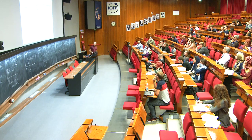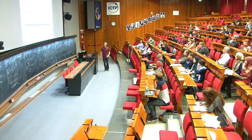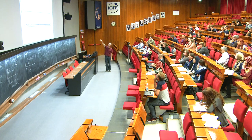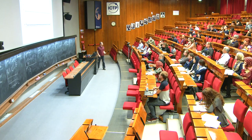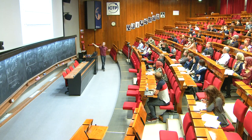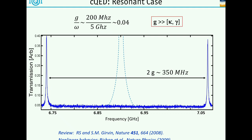If I bring my qubit on resonance with the cavity and measure transmission through my cavity, originally I would expect one Lorentzian line in the center. But now that my qubit actually couples to it, this line will split - I will see those dressed states and the splitting will be something like 2g. In this case the splitting is something like 350 megahertz. This is much larger than any of the kappas and gammas I've mentioned so far. So we can really go into what's called the strong coupling limit, where our qubits couple much stronger to the resonator than any of the decoherence rates in the system.